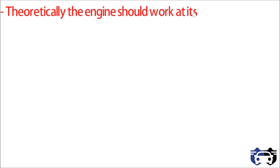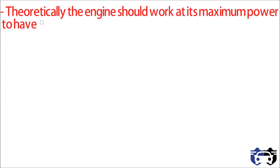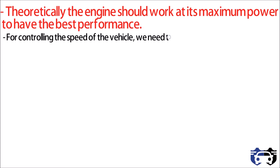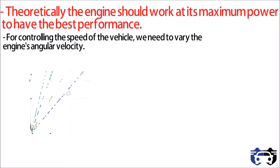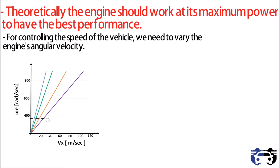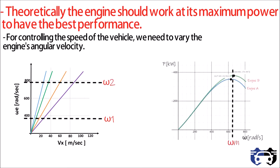Theoretically, an engine should work at its maximum power to have the best performance. For controlling the speed of a vehicle, we need to vary the engine's angular velocity. So for controlling engine angular velocity, we pick an angular velocity range omega 1 to omega 2 around omega m, which is associated with maximum power pm, and sweep the range repeatedly at different gears. This range omega 1 to omega 2 is called the engine's working range.